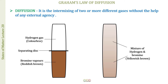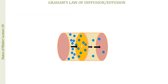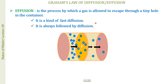Next, we have to understand effusion. Effusion is the process by which a gas is allowed to escape through a tiny hole in a container. In diffusion, gases mix over a large area, whereas for effusion, only a small hole is provided through which the gas is allowed to pass. In other parts, the gas is not allowed through. So effusion is like a fast, directed form of diffusion.